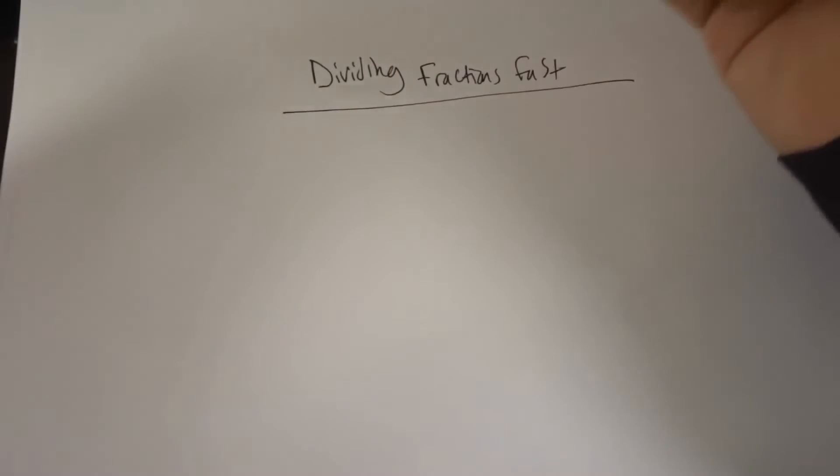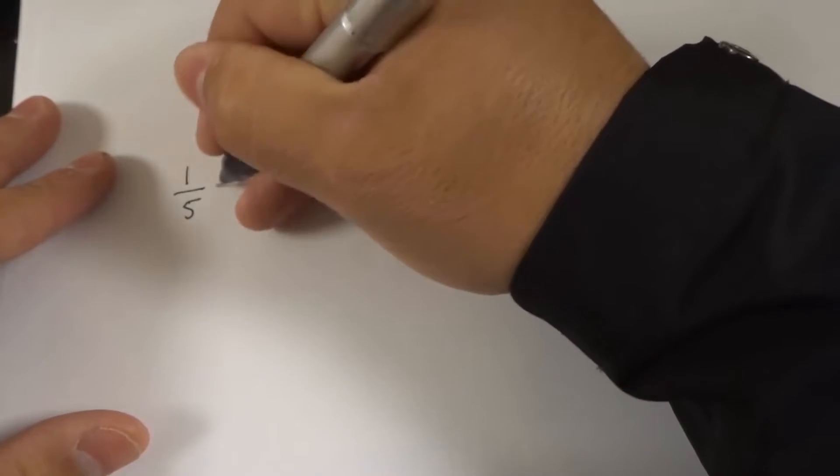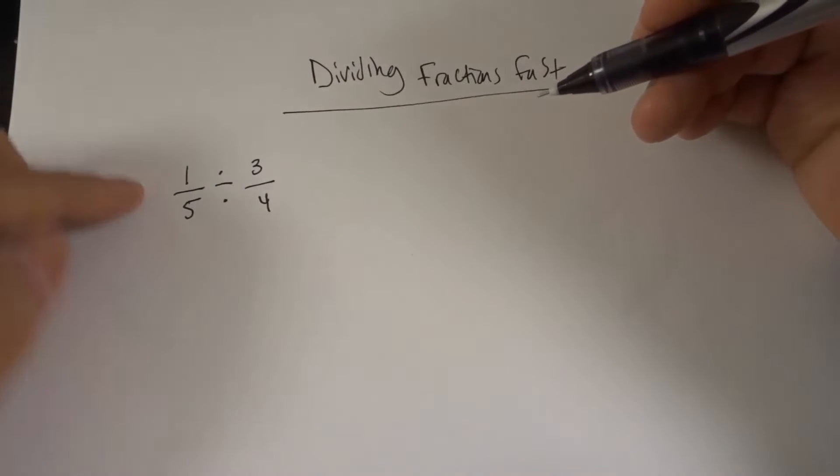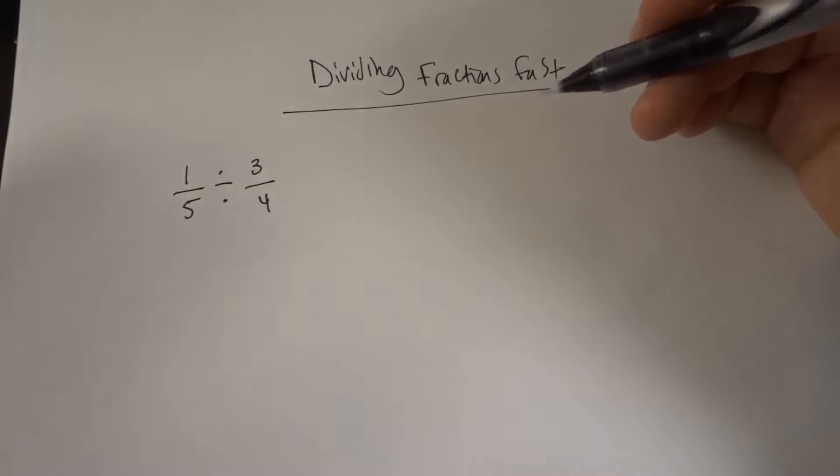Alright, so I'm just going to go ahead and write down two fractions that I want to be dividing with each other. So let's do something like 1 over 5 divided by 3 over 4. So we actually have these two fractions. We are taking 1 over 5 and we're dividing it by 3 over 4.